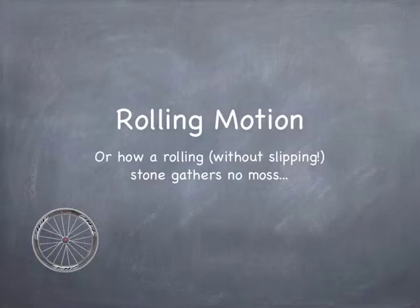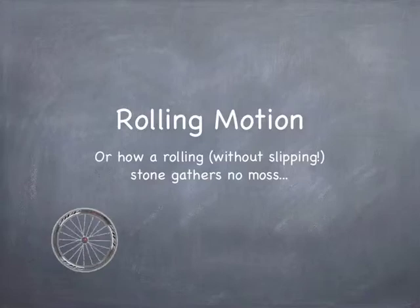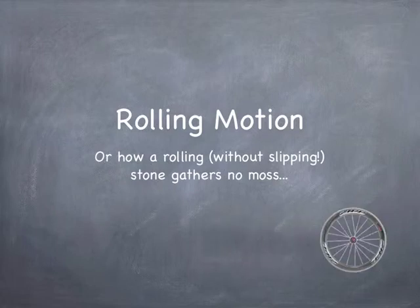Well, hello. We're back talking about rolling motion this time. So rolling motion is what happens when an object rolls without slipping so that the point of contact between the object that's rolling and the ground does not slide. That's the idea.